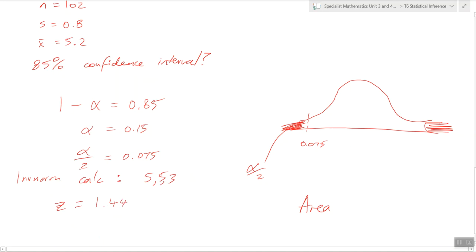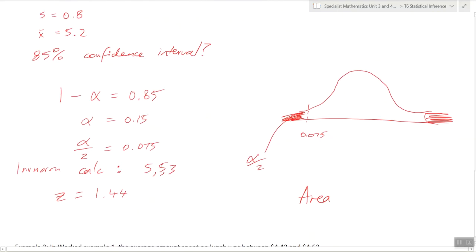Okay, so now we have the z score from the calculator. What can we do? Just use that formula we used in the last example to find the confidence interval.